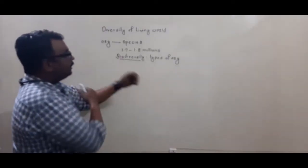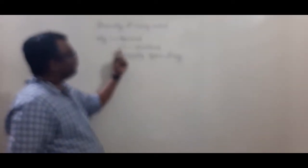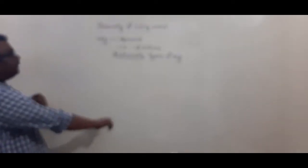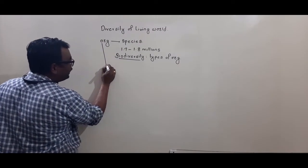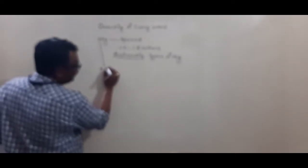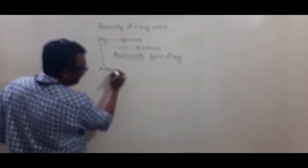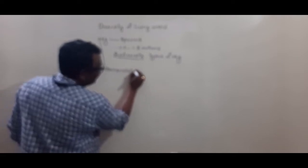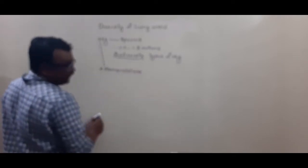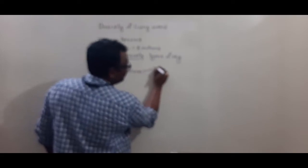The number of species we know is about 1.7 to 1.8 million. When we start studying the diversity of organisms, one important point is that each organism has been given a name. The method of naming organisms is called nomenclature.